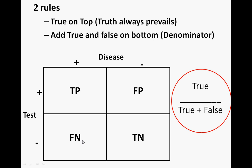False negative — same thing. You got a negative on the test, but you actually had the disease, so it was falsely negative. And then a true negative: the test was negative and the disease was negative. So if you set up the algorithm like this every time, it'll be perfect.